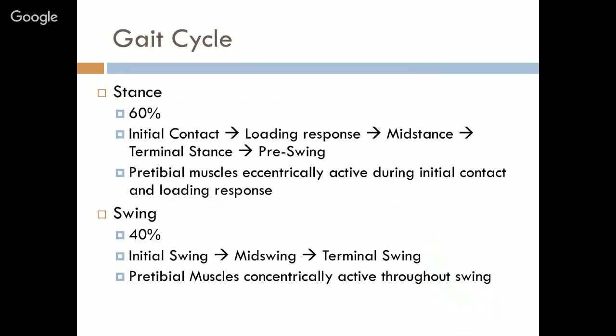The gait cycle is a single sequence of function of one limb, referred to as a stride, which is comprised of two steps. It is composed of two phases: the stance phase, which comprises 60% of the gait cycle, split into five time periods — initial contact, loading response, mid-stance, terminal stance, and pre-swing. The pre-tibial muscles affecting dorsiflexion are active during initial contact and loading response. Swing phase is 40% of the gait cycle, when the foot is in the air for limb advancement, divided into initial swing, mid-swing, and terminal swing. The pre-tibial muscles are concentrically active throughout the entire swing phase.